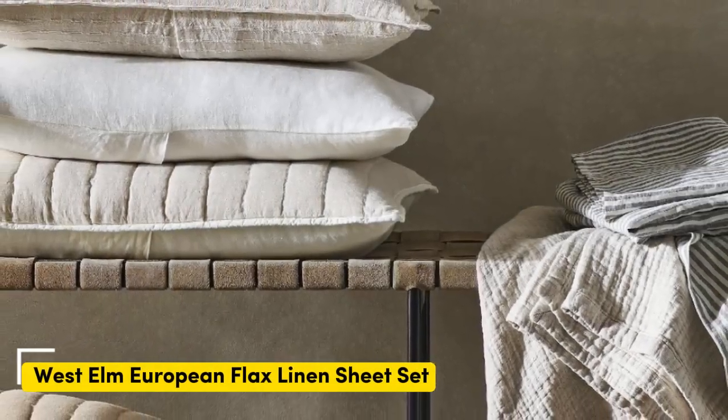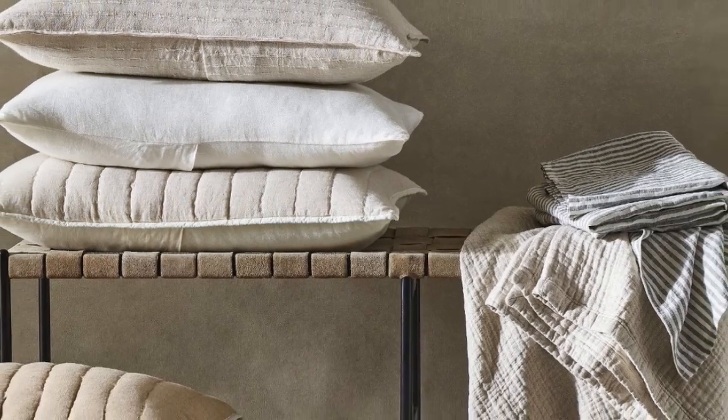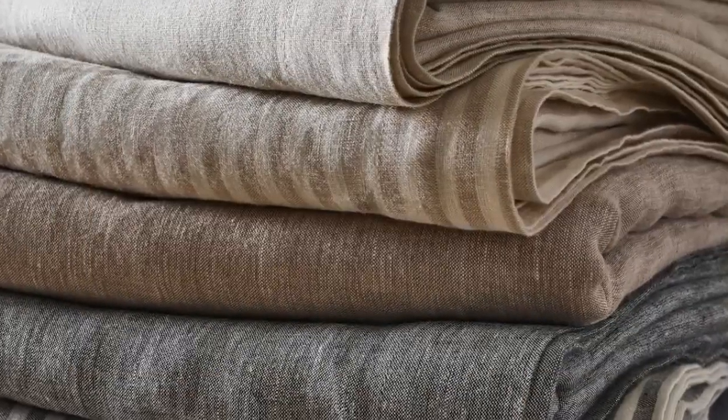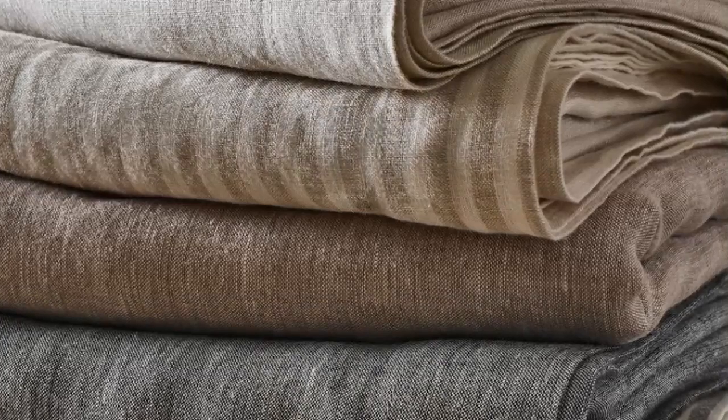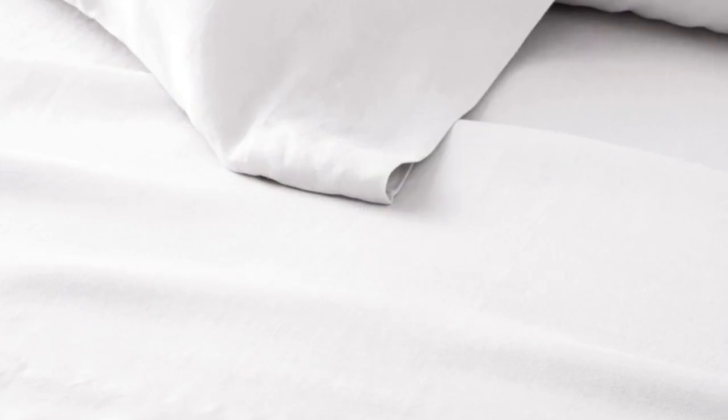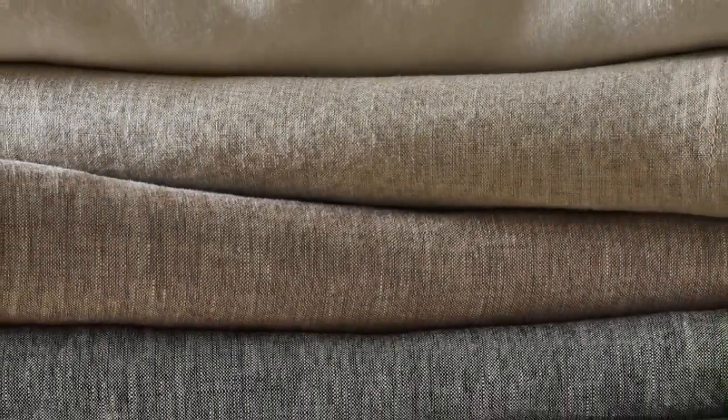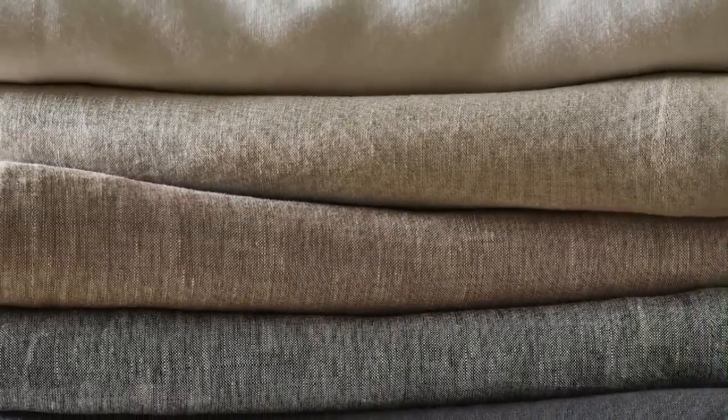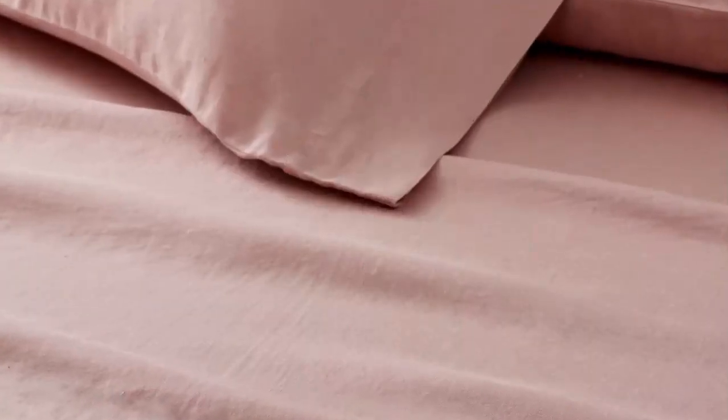Number two. What we like: Exceptionally soft, temperature regulating, 22 color choices available. What we don't like: Prone to wrinkles, longer wait for made-to-order colors. Sheets with temperature regulating properties can be especially helpful for those with night sweats, and the West Elm European Flax Linen Sheet Set is both breathable and moisture-wicking, with a high-quality construction. These exceptionally soft sheets felt sturdy and durable upon arrival.